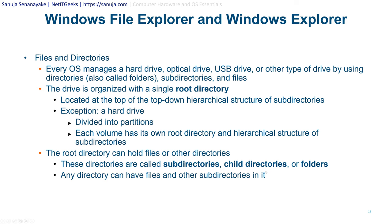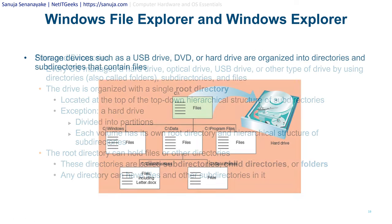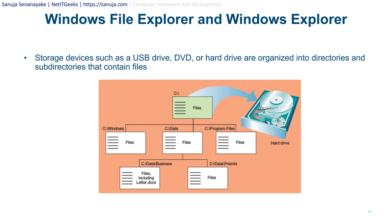The root directory can hold files or other directories — these directories are called subdirectories, child directories, or folders. Most end users are familiar with the term 'folders.' Any directory can have files and other subdirectories in it. Storage devices such as USB drives, DVDs, or hard drives are organized into directories and subdirectories containing files. In this example, a hard drive with one partition has the C: root divided into a Windows folder, Data folder, and Program Files folder, with the Data folder further divided into subdirectories.